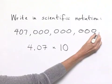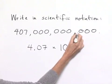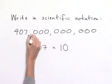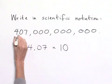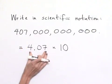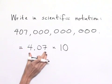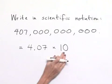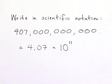So we're going to count. We have 3 places, another 3, another 3—that's 9. And then 2 more, which is 11. So to rewrite this in scientific notation, we have 4.07 multiplied times 10 to the 11th power.